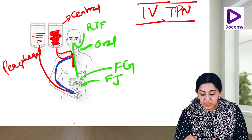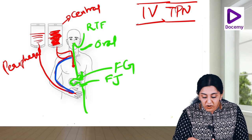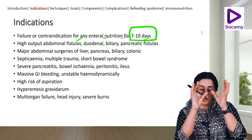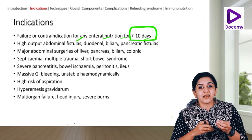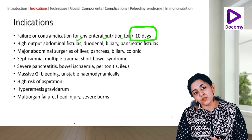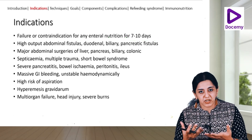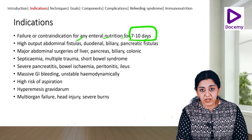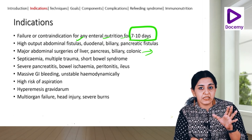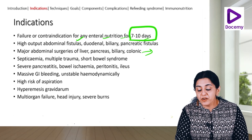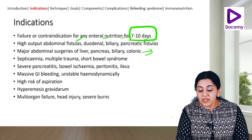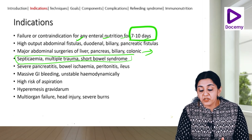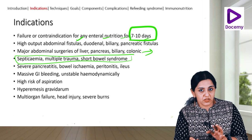When there is a leak in the gastrointestinal tract you have to avoid the GIT and use another route for nourishing the patient. Abdominal surgeries of the liver, pancreas, biliary, or colonic require the GIT to be kept at rest. Septicemia, multiple trauma, short bowel syndrome, severe pancreatitis, bowel ischemia, peritonitis, and ileus all require rest for the gastrointestinal system.